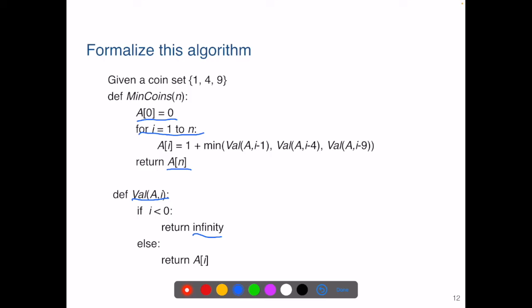What's our next question? Yes, the complexity. This Val function takes a constant time. This MinCoins function has a for loop that runs in linear time. So the overall complexity of this algorithm is big O of n. It's a really efficient algorithm.